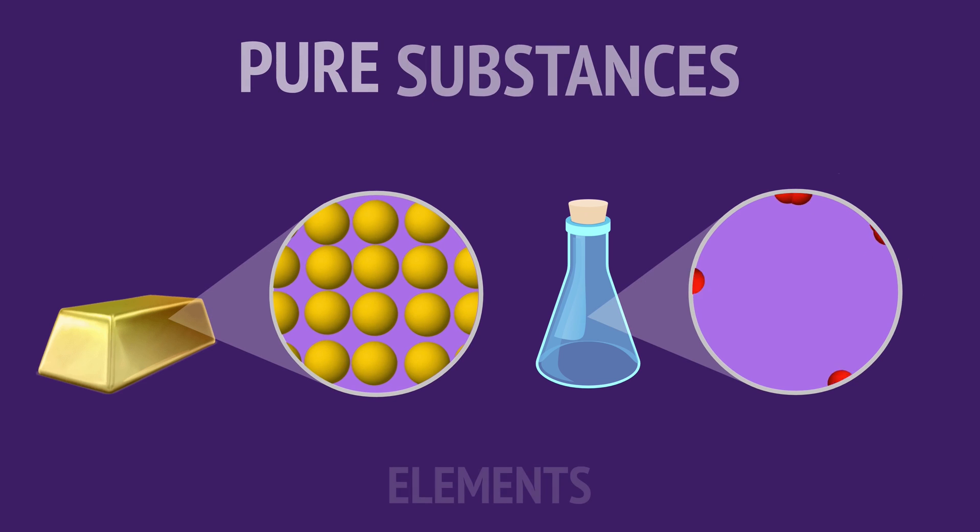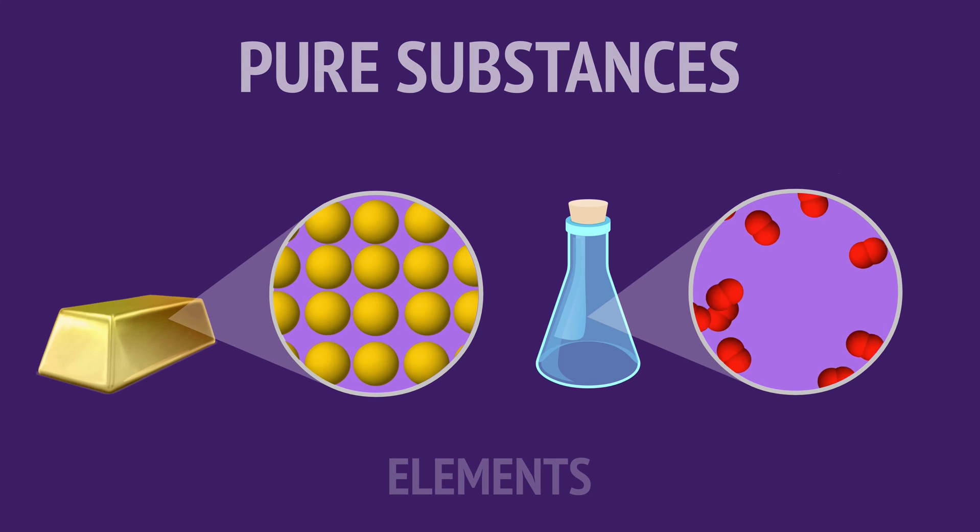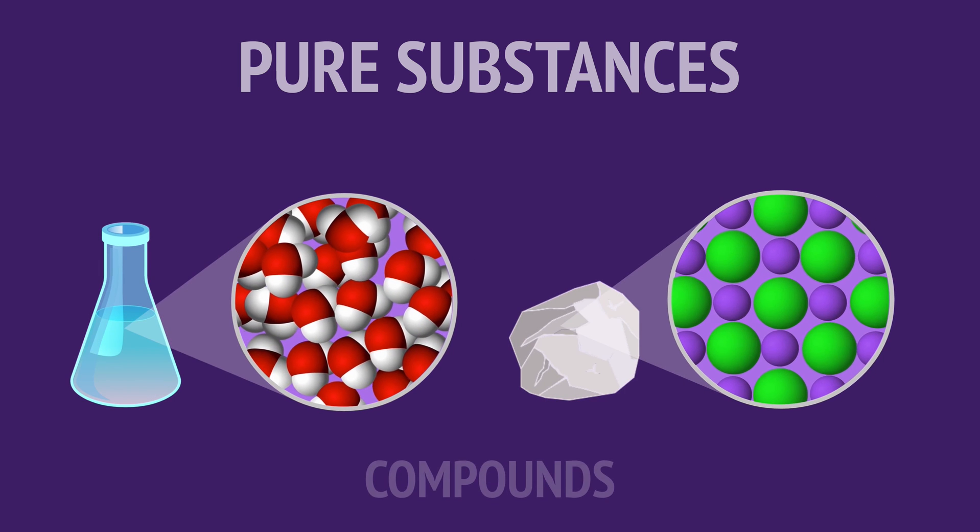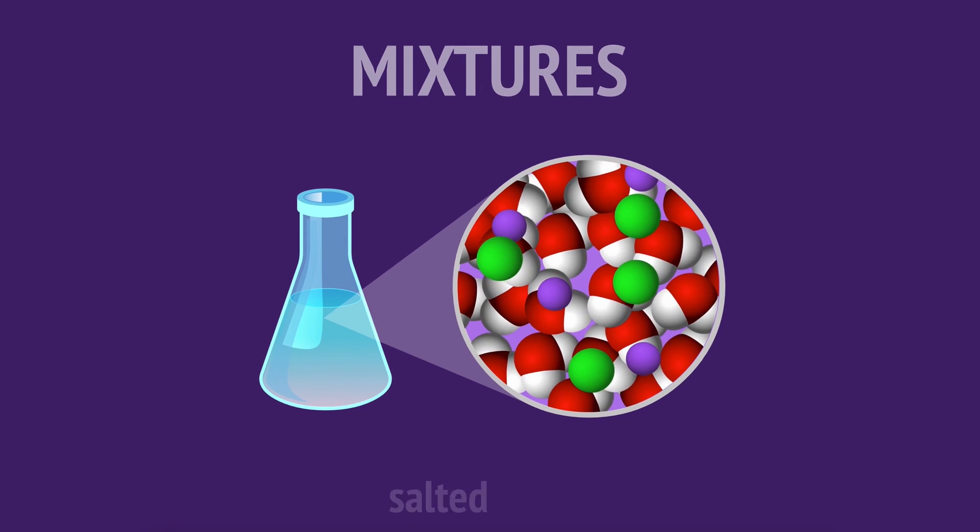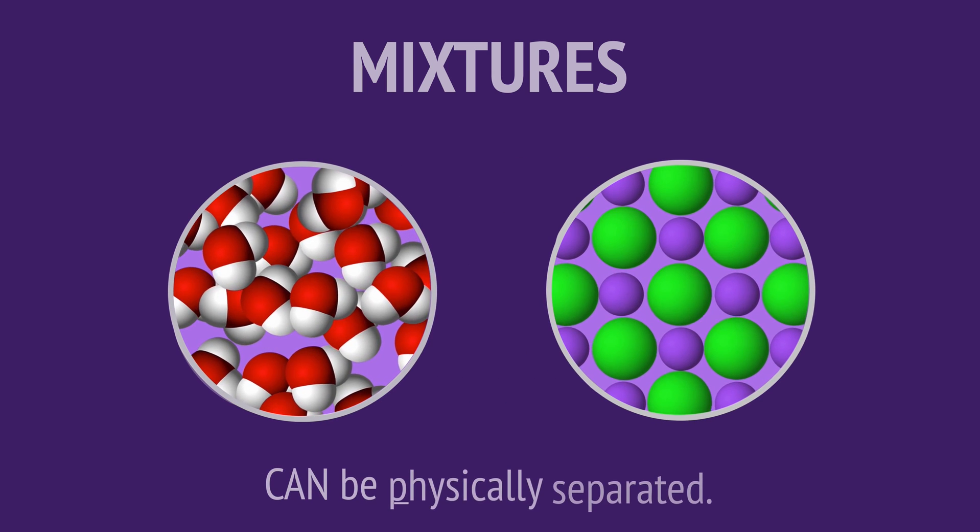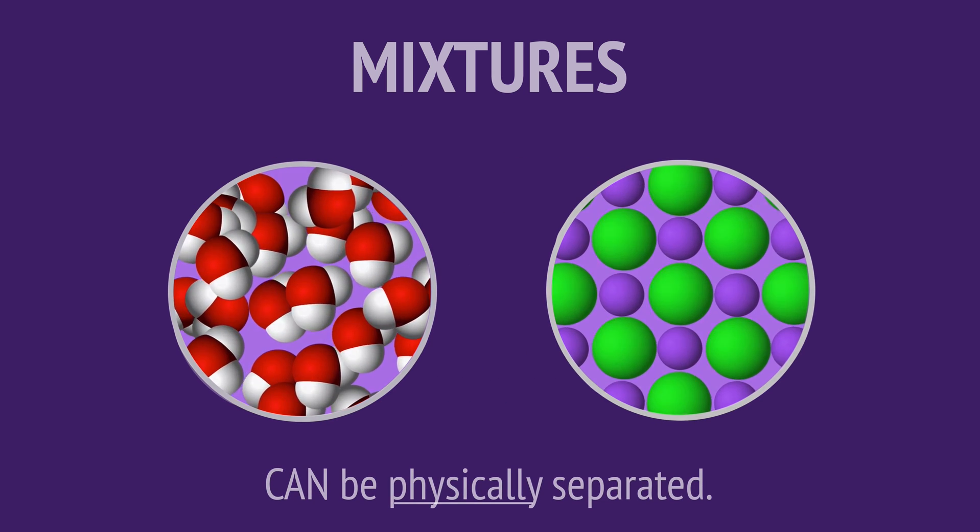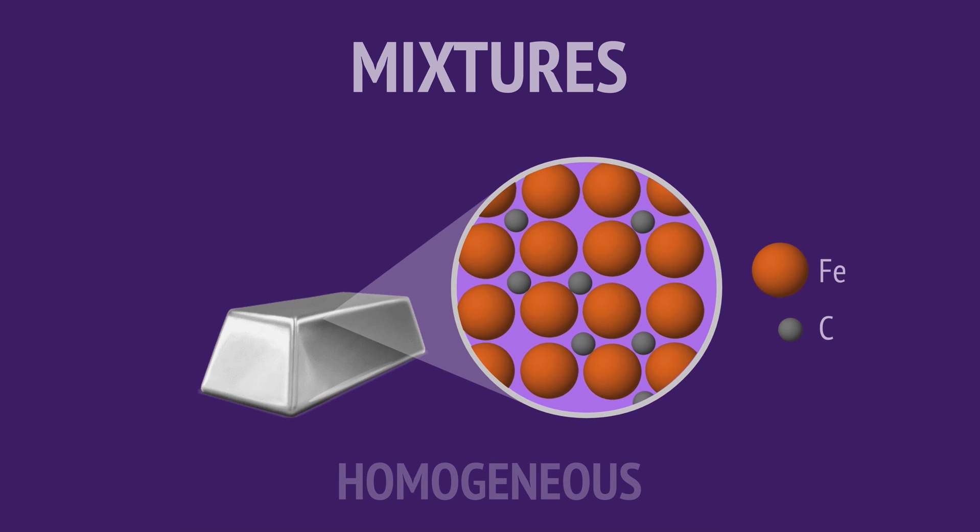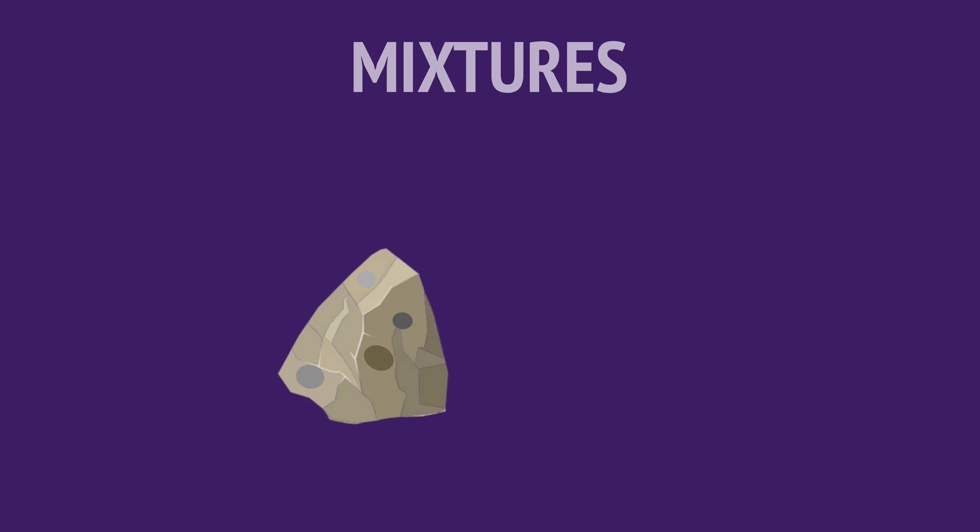So in this video, we've seen that pure substances contain one type of matter, either a single element or a single compound. We've seen that a mixture is a blend of two or more pure substances, which can be separated from the mixture by physical processes. And we've seen that mixtures can be either homogeneous or heterogeneous.